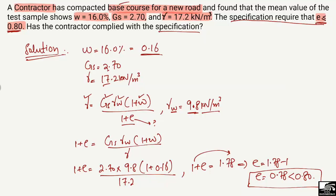In summary, when a practical example is given with parameters like unit weight, specific gravity, and water content, we can calculate the void ratio and compare it to the specification. Here, our void ratio is less than the required value, so we are within specification. Hope you guys understand — don't forget to subscribe to our channel. Thank you for watching.